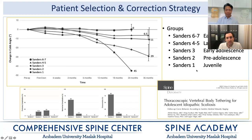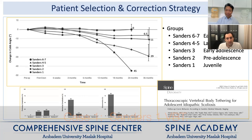Let me walk you through case examples. I'll go from Sanders 1 through Sanders 7, and I'll split Sanders 3 into two parts — Sanders 3A and 3B — giving eight case examples to show how we currently approach these different Sanders groups.